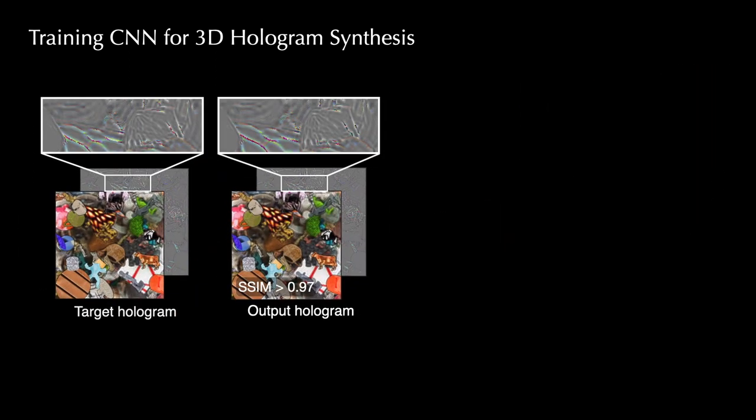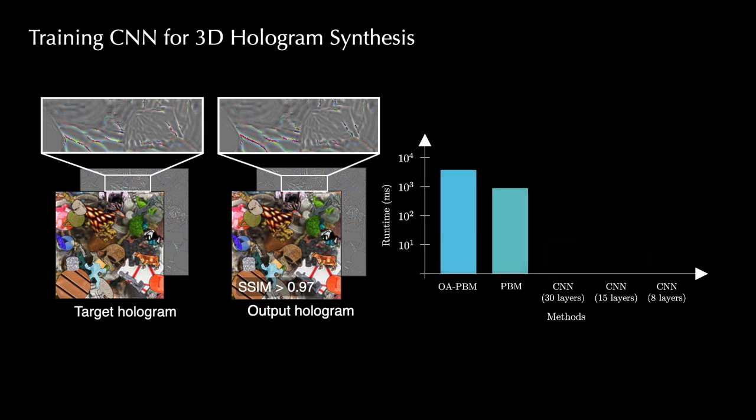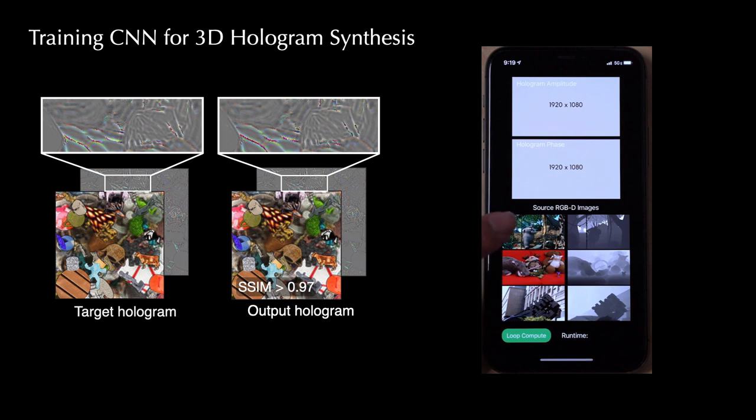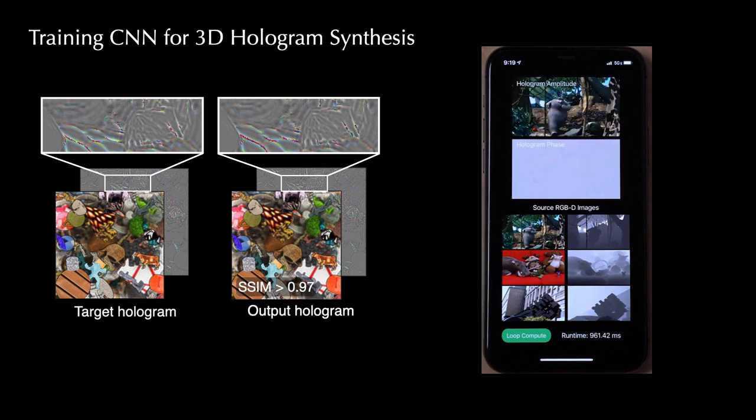The trained network can faithfully predict the target hologram and reproduce high-frequency fringes in the phase map. Comparing to physical simulation, our CNN is two orders of magnitude faster on the GPU, and we can vary the model size to tailor for different computational devices. It further runs interactively on mobile phones by leveraging the specialized chips for CNN acceleration, which promises untethered AR-VR experience in the future.